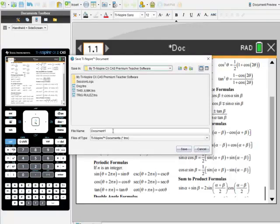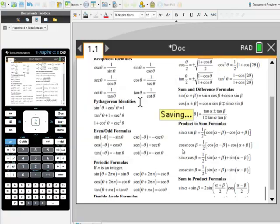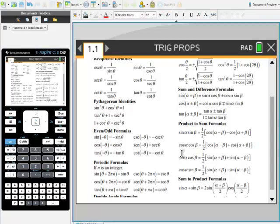I'm going to name this. It says document1 which is kind of weird. So I'm going to name this Trig Props. So I'm going to go ahead and save this. This becomes really important. So important step. So by doing this PNG turns to TNS. Now we can do something that's more important.